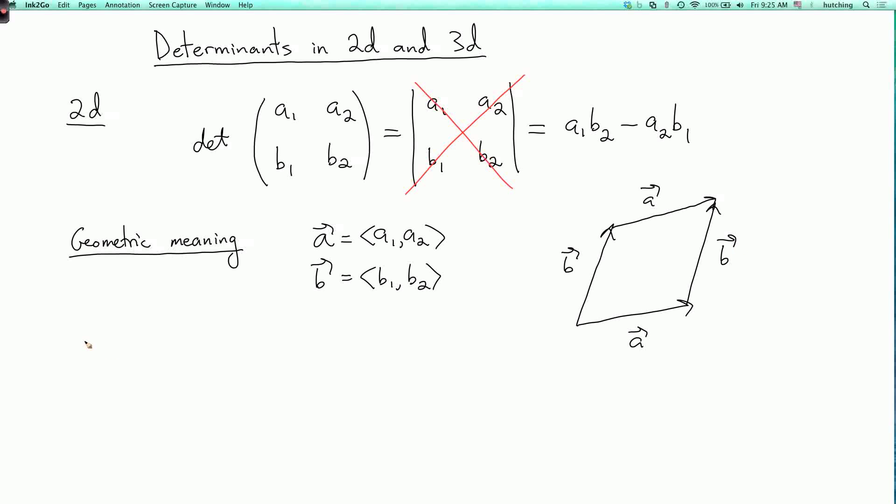The meaning of the determinant is that the determinant of a1, a2, b1, b2 is plus or minus the area of the parallelogram.